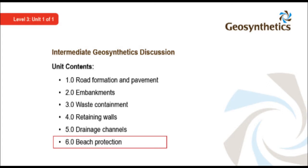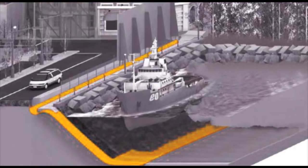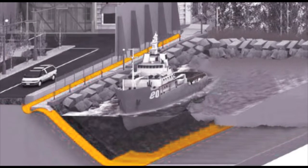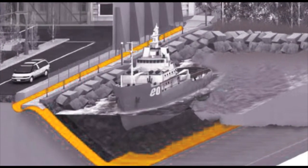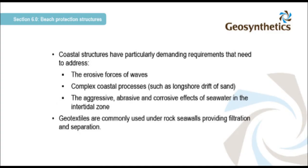The last category of engineered structures we will look at are used for beach protection. Coastlines have a number of functions such as for port facilities or recreation, and can be formed from many different types of material, from sandy beaches to rocky coastlines. Coastal structures have particularly demanding requirements, including the erosive force of waves, complex coastal processes such as longshore drift of sand, and the aggressive, abrasive and corrosive effects of seawater in the intertidal zone.